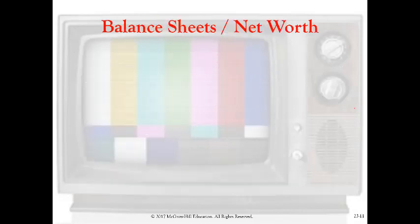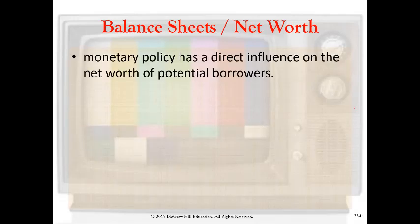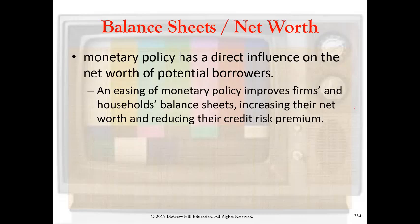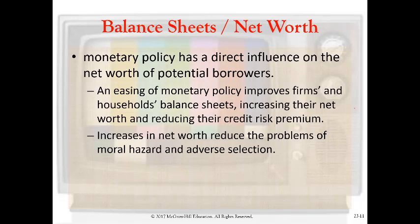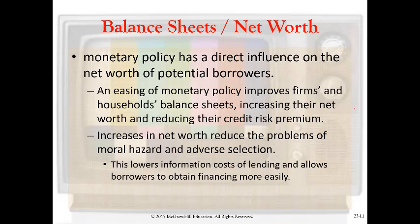Let's move on and talk about the balance sheet or net worth channel. Monetary policy has a direct influence on the net worth of potential borrowers — that is, the value of their assets minus the value of their liabilities. What happens with monetary easing — a reduction in interest rates and increase in money growth — is that we see an improvement or increase in people's net worth. With higher net worth, people's credit risk goes down because they have more asset value to meet their liabilities. Banks like increases in net worth because that reduces moral hazard and adverse selection. So that would contribute to the easing of credit conditions.